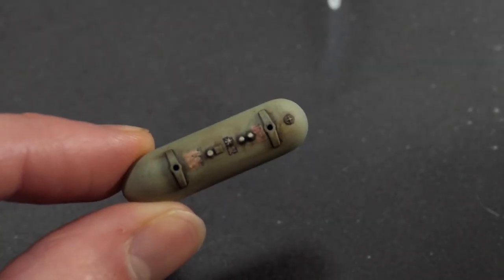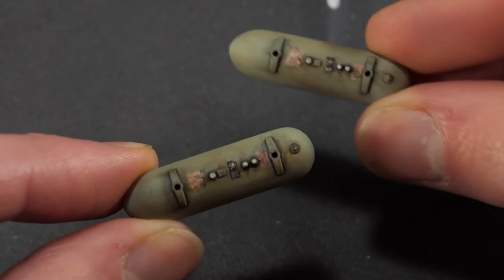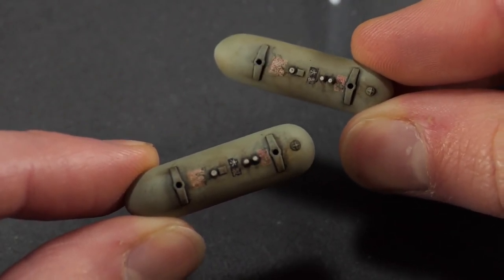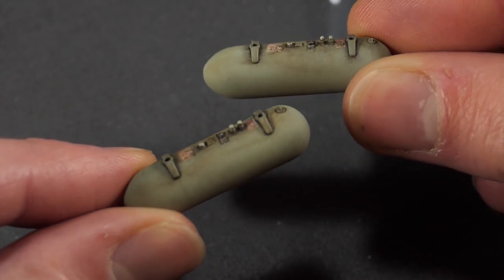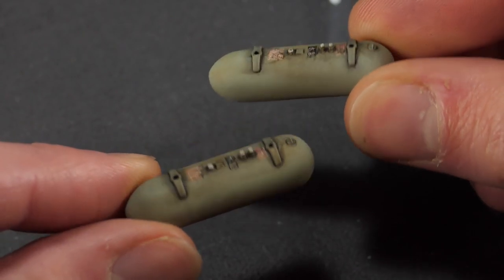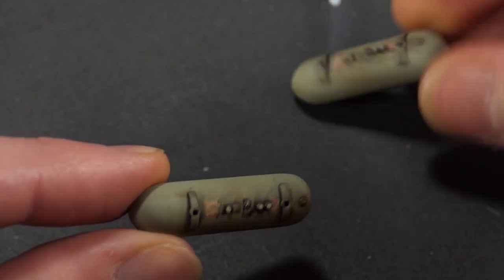Here's the finished drop tank that I sprayed with a matte varnish already. If you look closely on the sides, you can see some of the tonal variation from the chipping fluid and the two shades of gray that we used earlier in the build.